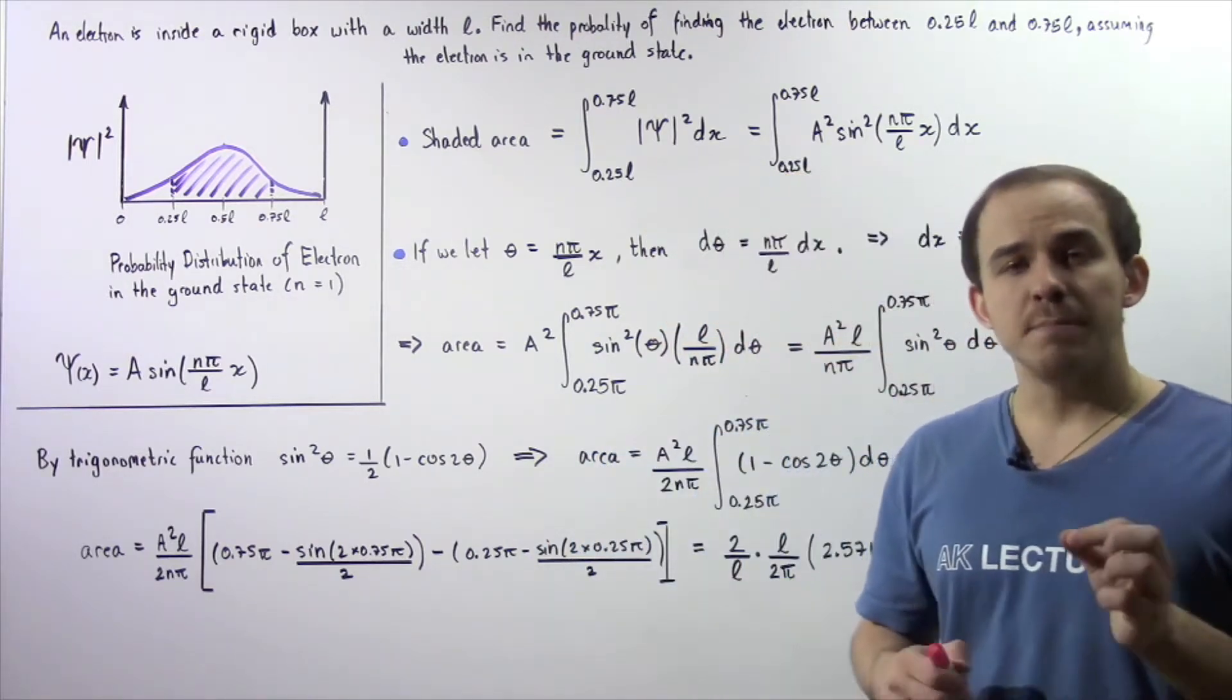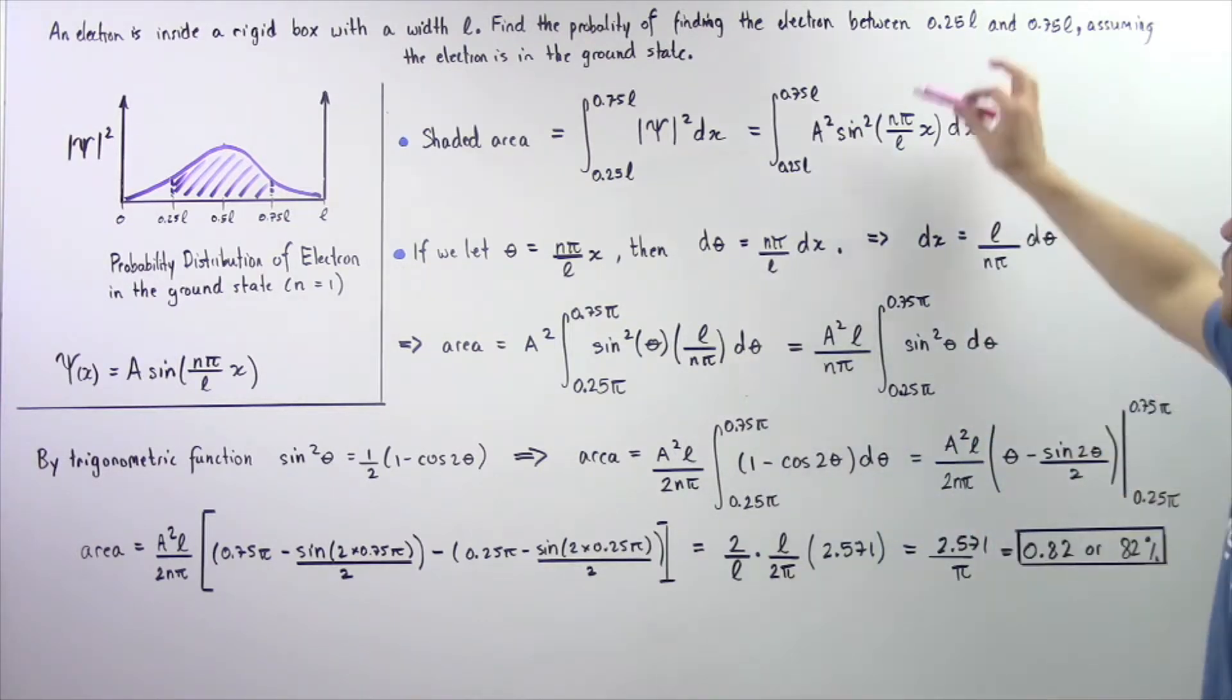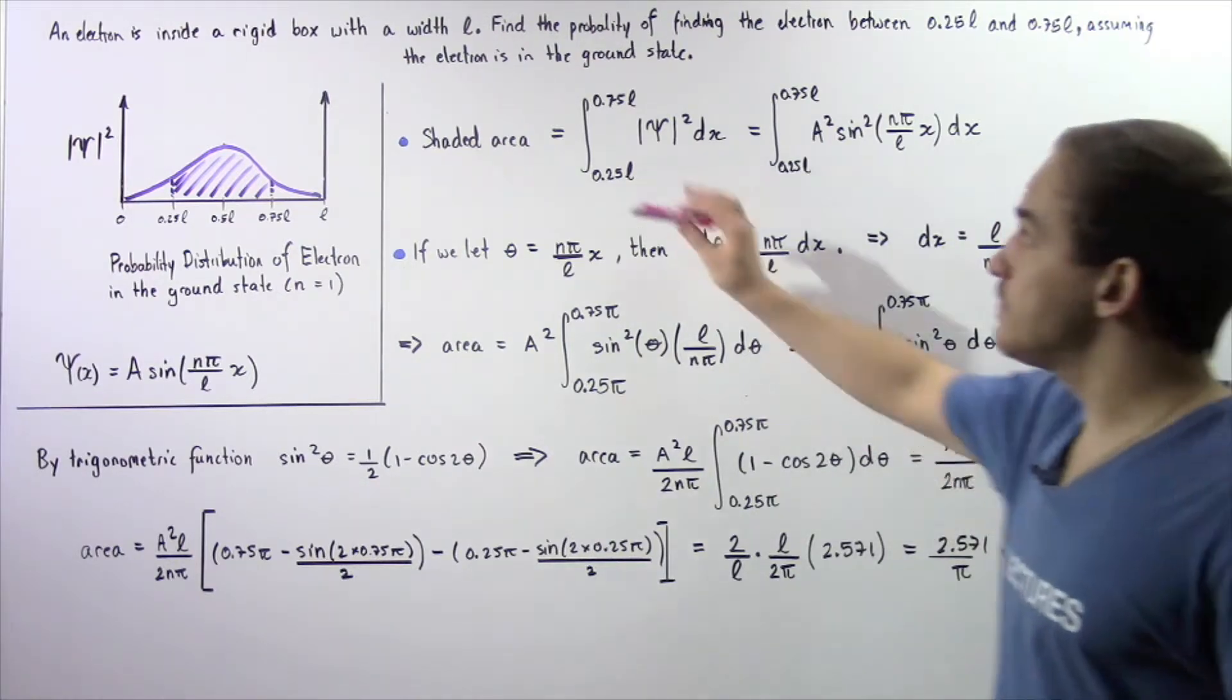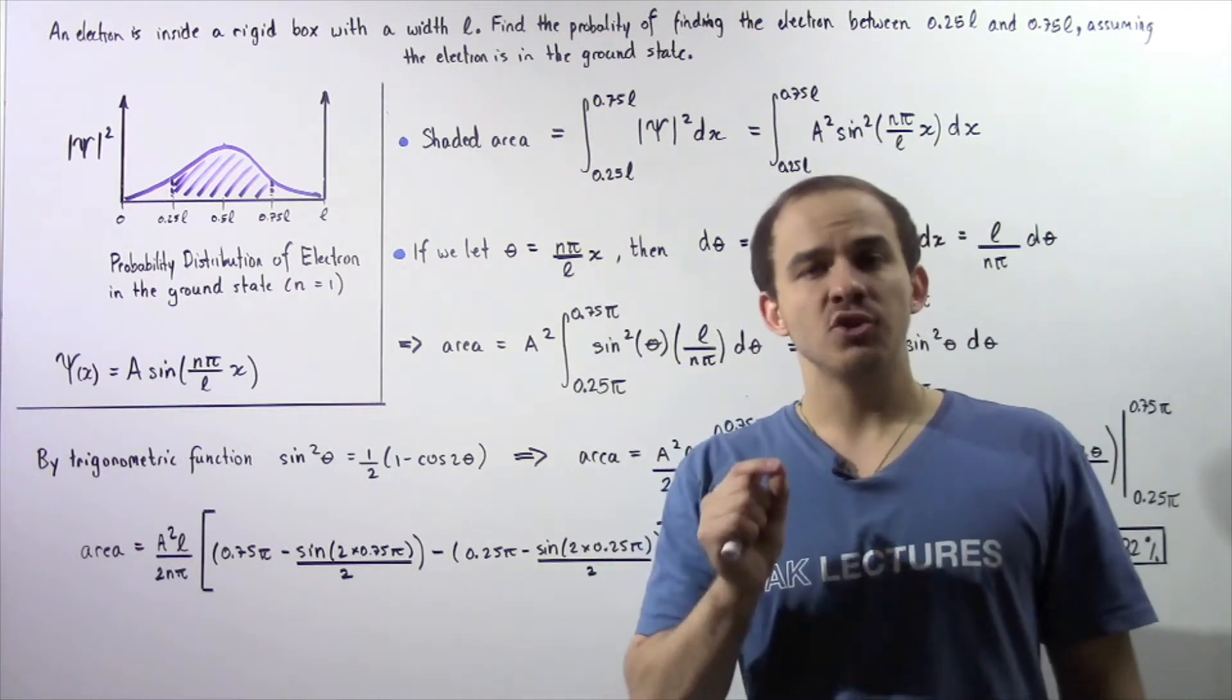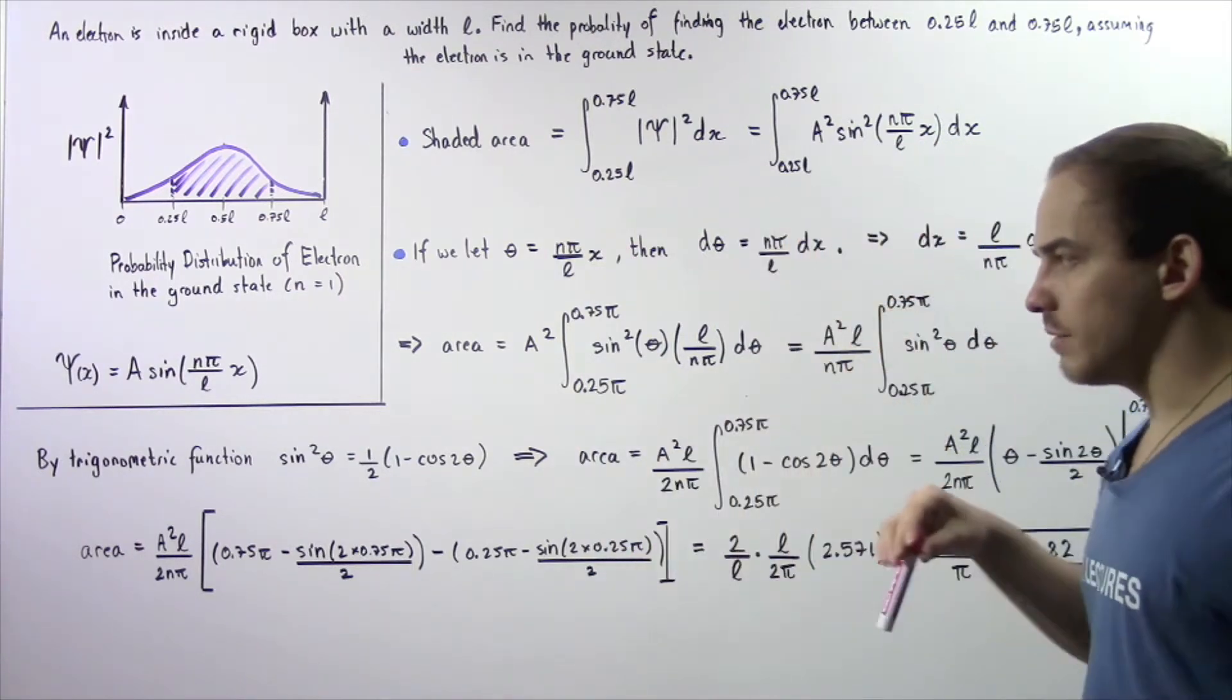We want to find the probability of finding our electron between the points 0.25L and 0.75L, assuming that the electron is in the ground state, so the quantum number n is equal to 1.